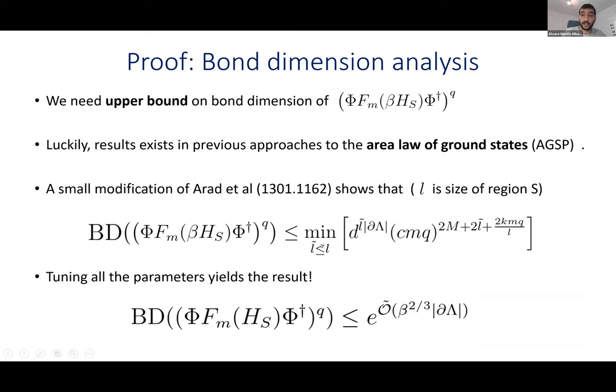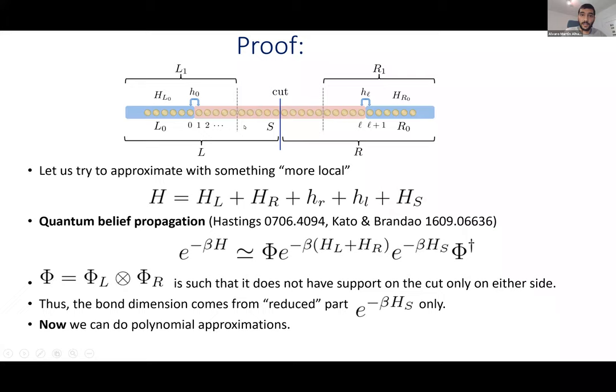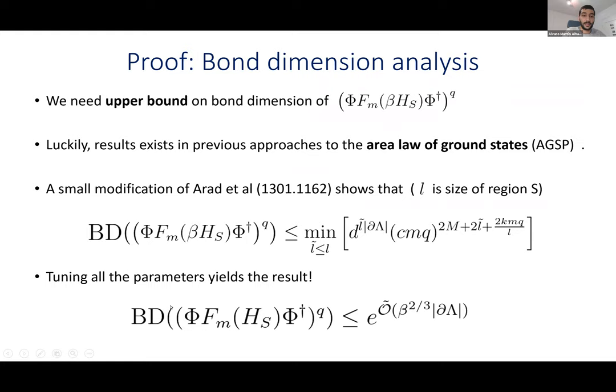The best proof of the area law for ground states that currently exists has an upper bound on the bond dimension of the MPO, which gives us what we need. Now with this expression, we have to make choices: what is the degree M of the polynomial approximation and what is the length l of the region we care about. If the region is too small the approximation is not good; if it's too big the bond dimension blows up. So you have to choose the right value — there's a sweet spot.